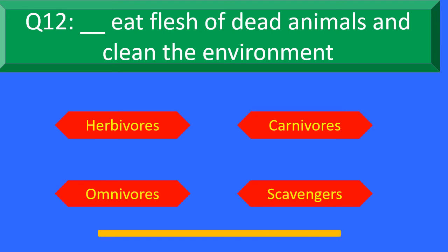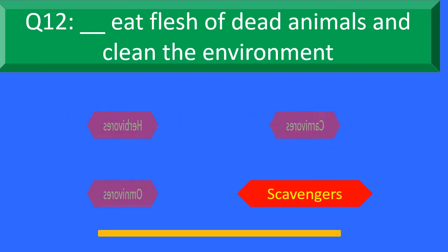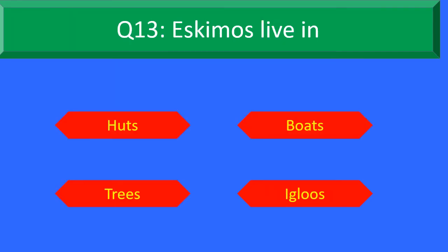And your time is up. The right answer is Option D: Scavengers. Scavengers eat flesh of dead animals and clean the environment. Moving to Question Number 13.